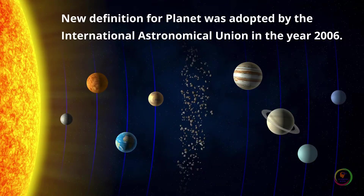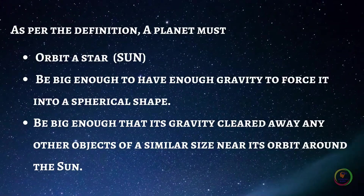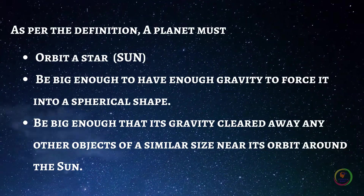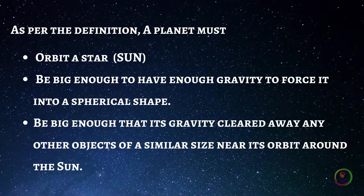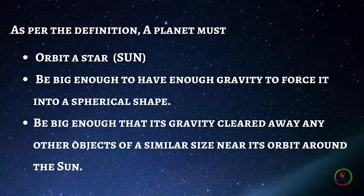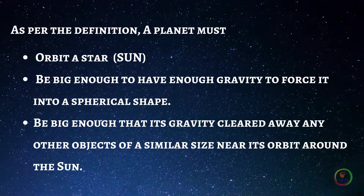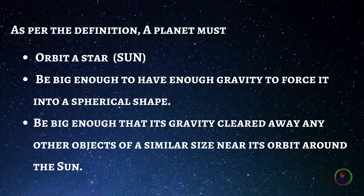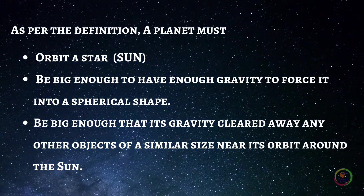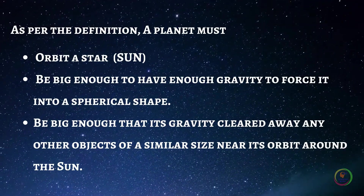A new definition for planet was adopted by the International Astronomical Union in the year 2006. As per the definition, a planet must orbit a star, it must be big enough to have enough gravity to force it into a spherical shape, and it must be big enough that its gravity cleared away any other objects of similar size near its orbit around the sun.